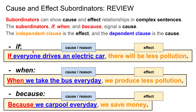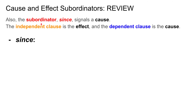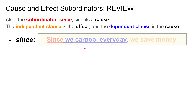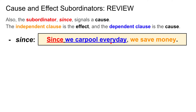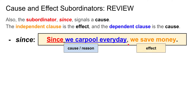So once again, when you use a subordinator to show cause and effect — such as 'if,' 'when,' and 'because' — the dependent clause with the subordinator is the cause, and the independent clause is the effect. The subordinator 'since' also signals cause. For example: 'Since we carpool every day' is the dependent clause — the cause. 'We save money' is the independent clause — the effect.